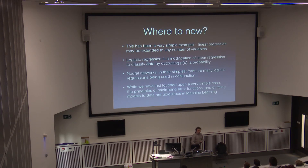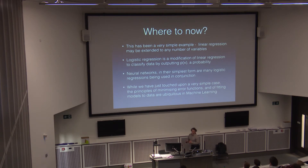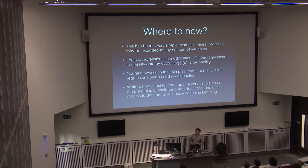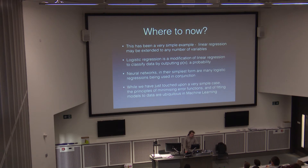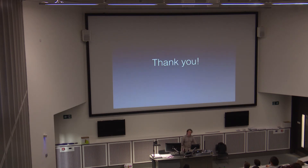This has been a really simple example, although this algorithm is one of the fundamentals upon which lots of other things are built. If we modify it so that instead of outputting a real number we output a probability, we get what's called logistic regression, which can be used to classify information instead of making continuous predictions. And by combining lots of these together is how you build a neural network, which are some of the most powerful machine learning algorithms we have today. That's all I have — it's a short talk, if there are any questions I'd be happy to answer.